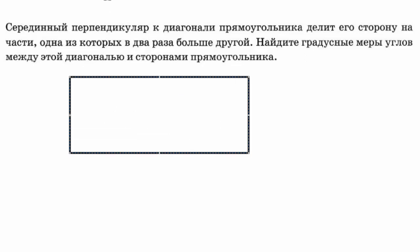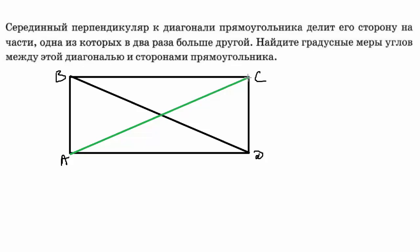У нас есть прямоугольник, есть диагональ. Давайте нарисуем и обозначим буквами A, B, C, D. Проведём вторую диагональ. Мы знаем, что диагонали прямоугольника пересекаются, и точка пересечения O делит каждую пополам: BO равно OD.